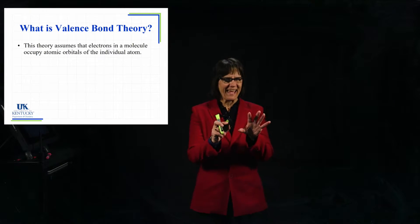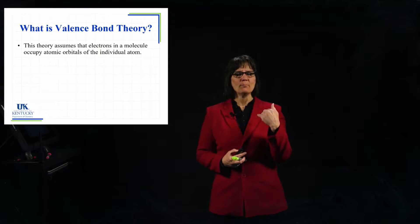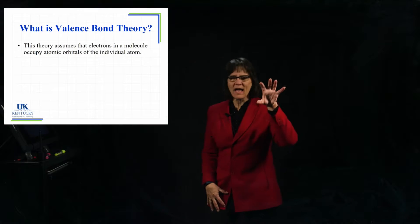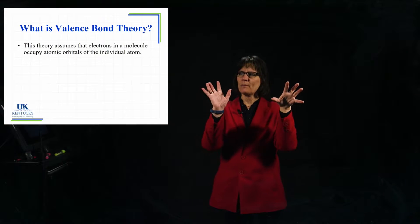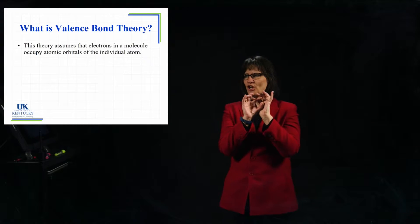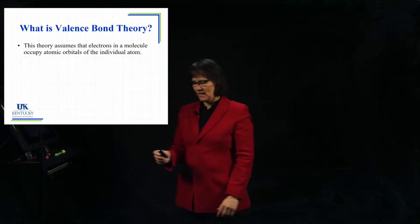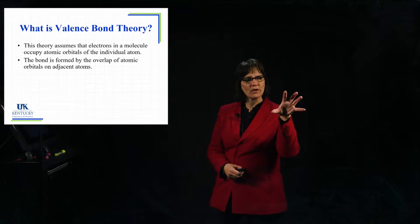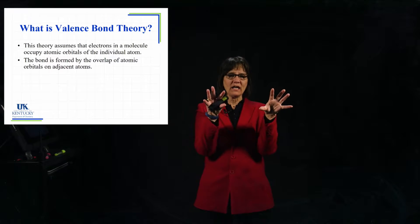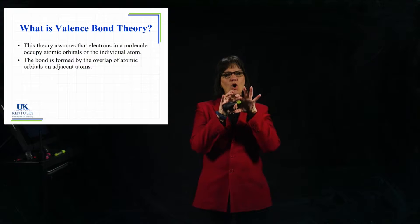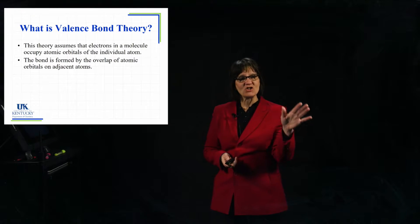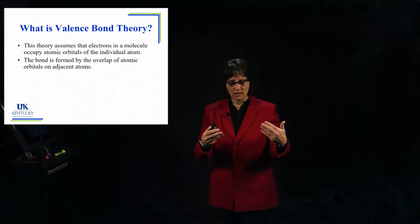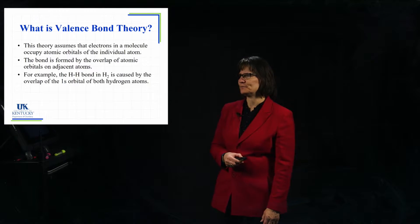Valence bond theory assumes that an electron in a bond occupies overlapping atomic orbitals. We have an atomic orbital on this atom and an atomic orbital on this atom — they overlap and share space. That is what a bond is in valence bond theory. I have to have an orbital with one electron in it on each atom, so that when they overlap and share this space, there are only two electrons in that shared space, just like in an atomic orbital by itself.